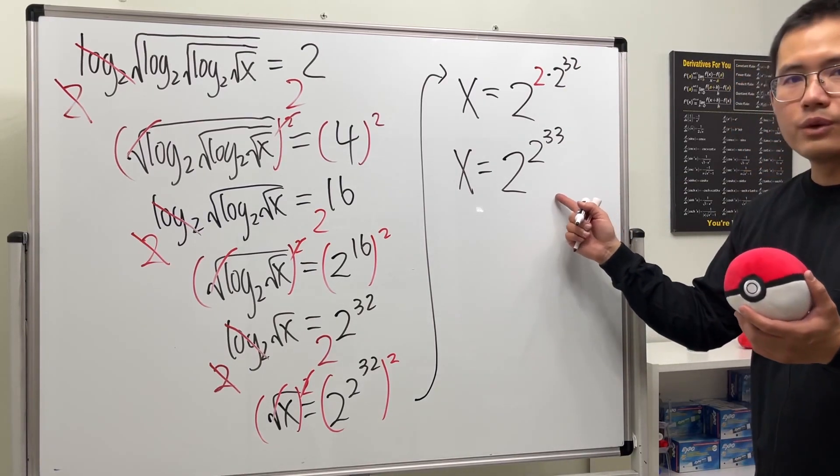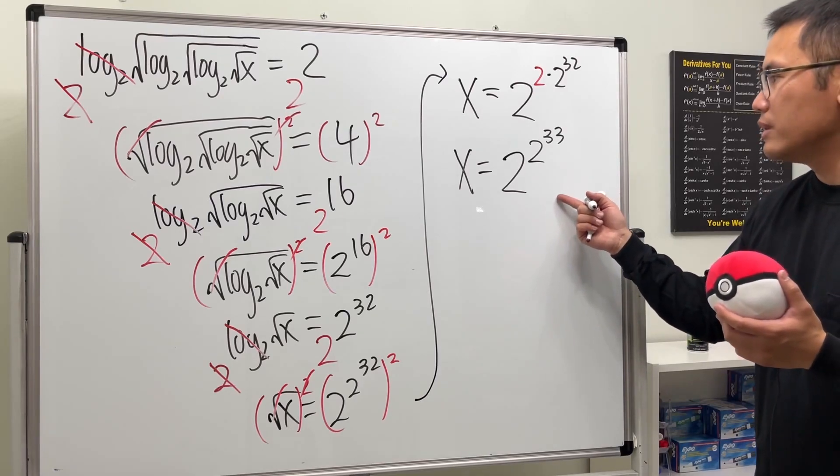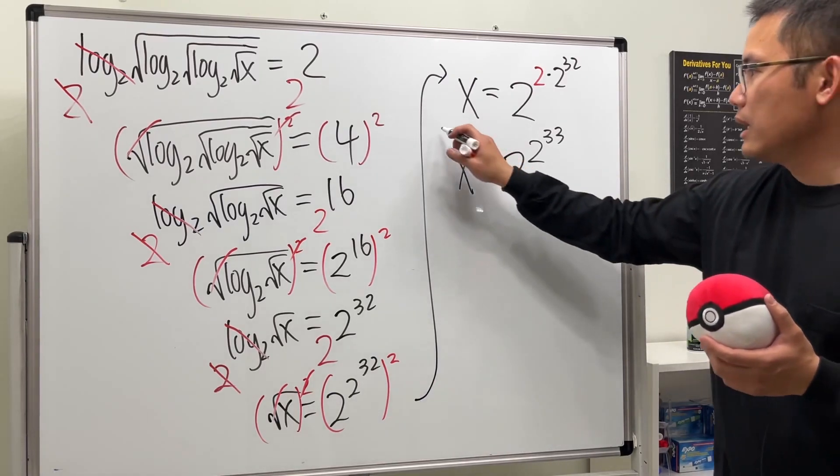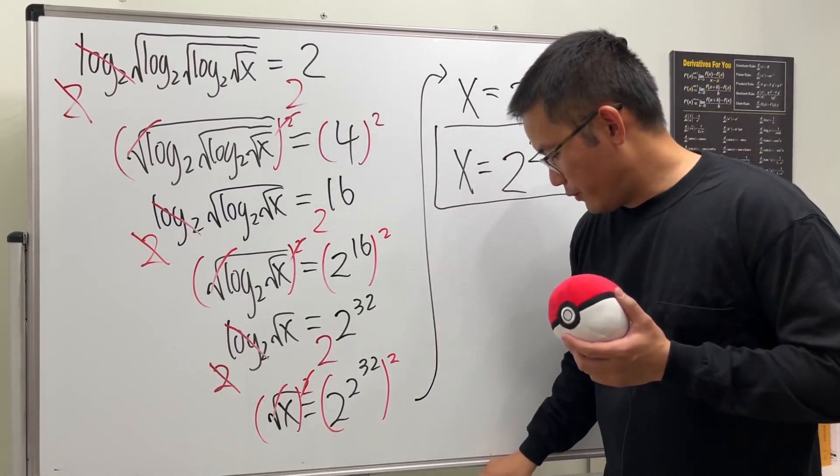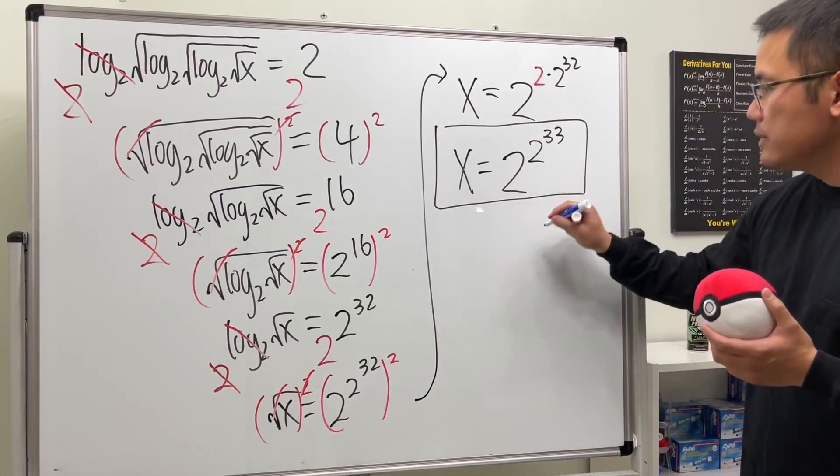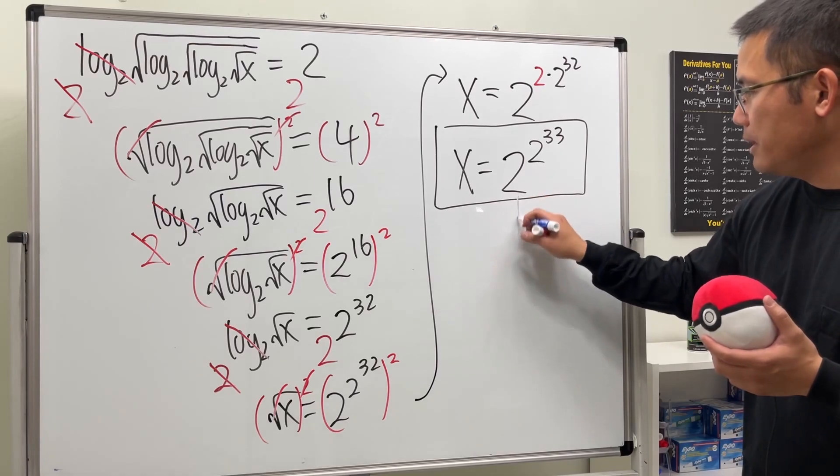Right, because 1 plus 32. If you have your cell phone, if you have your iPhone, Android, just kind of compute it and see how big this is.